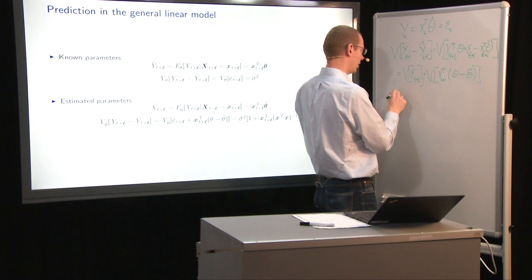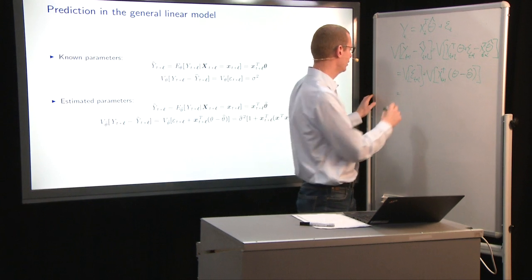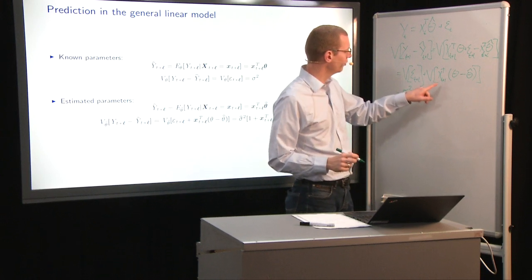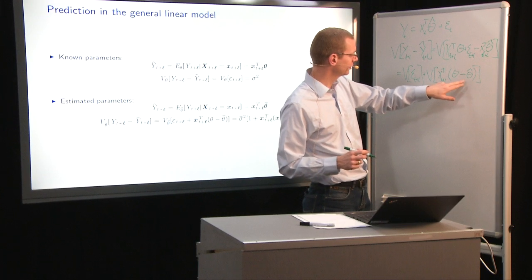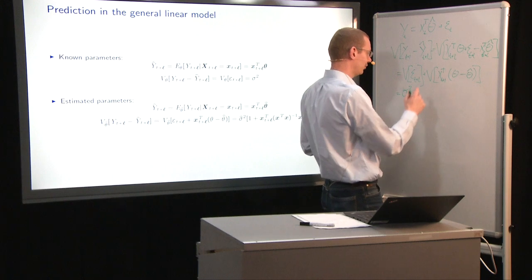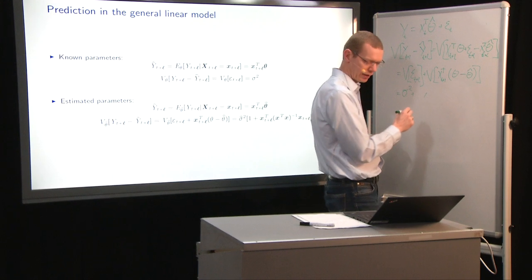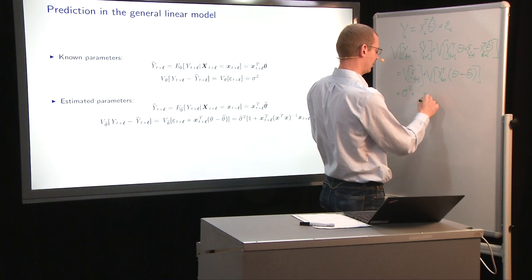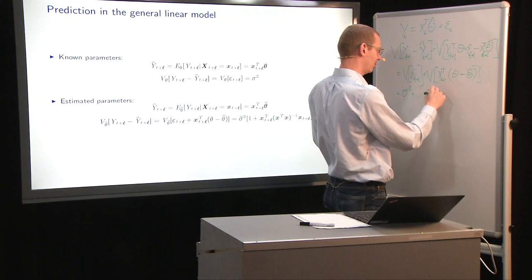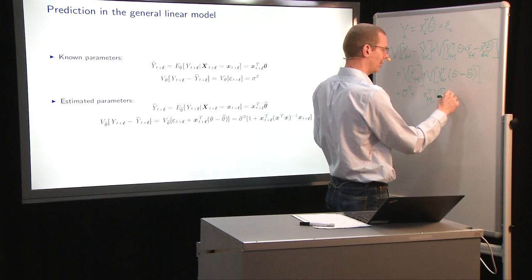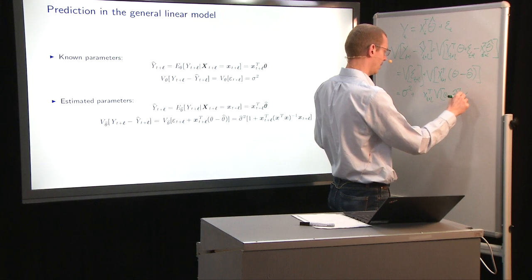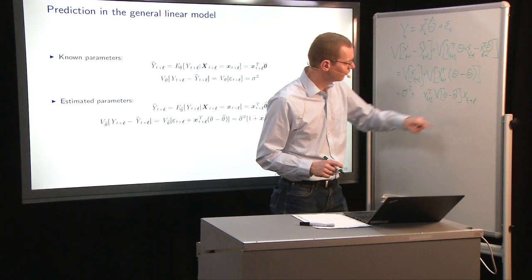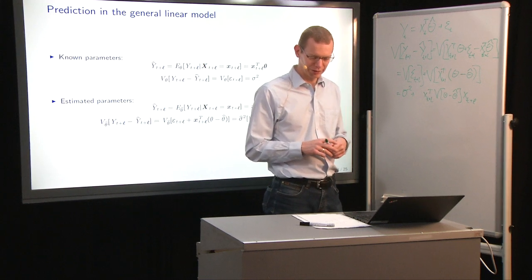So what we have is X t plus L transpose on theta minus theta hat, which equals... Now the first part here is just sigma square plus... And now when we have a constant that we multiply on something, where we have a random variable here, we have to take that constant outside, and then we have it as X t plus L transpose on the variance of theta minus theta hat.